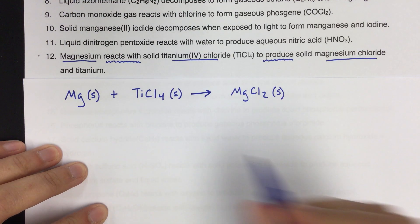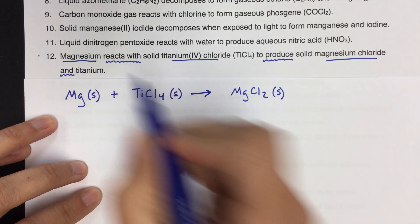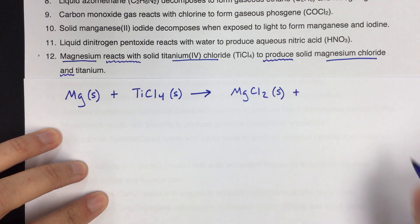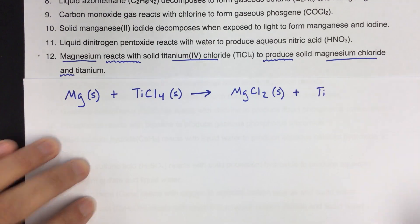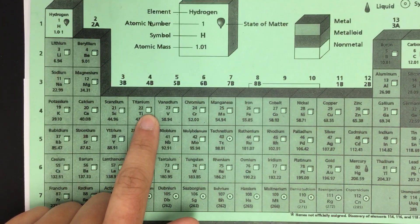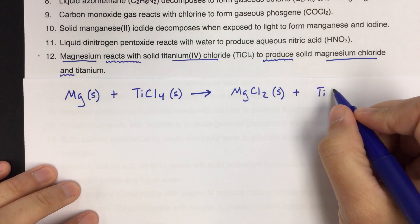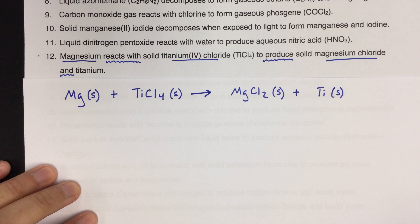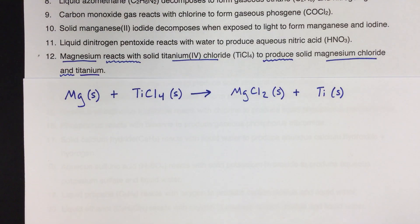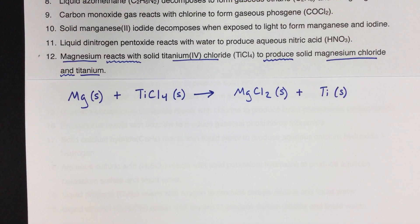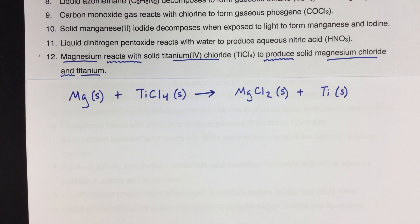And then 'and,' so plus sign. Titanium. So that's another element. So titanium, the formula for titanium is Ti. And then just to make sure here we find titanium. And it is also solid. So we've now translated all of the words into a formula with our reactants and products, plus signs and arrows. And now we need to balance this.